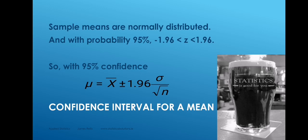Putting all that together, we can state with 95% confidence that mu, the population mean, is equal to x bar, the mean of the sample, plus or minus 1.96 times sigma over root n, where sigma over root n is the standard error of the sample mean. That's a great formula and it allows us to estimate the mean of a population with confidence, provided that we know sigma, the population standard deviation. That's the only weakness in this formula.